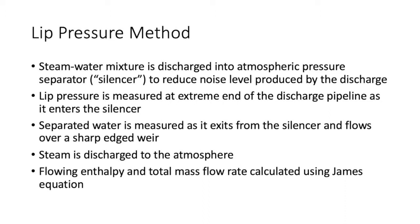To apply the lip pressure method, the steam-water mixture is discharged into an atmospheric pressure separator — also called a silencer — that reduces the noise level produced by the discharge. The lip pressure is then measured at the end of the discharge pipeline as it enters the silencer, and the separated water flow exiting the silencer is measured over a sharp-edged weir while steam is discharged into the atmosphere. Flowing enthalpy and total mass enthalpy are then calculated using the James equation.